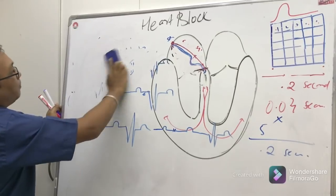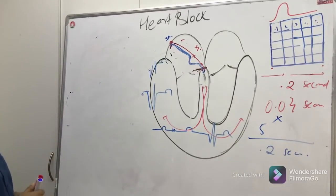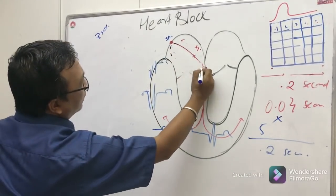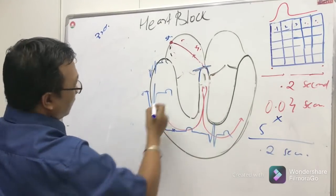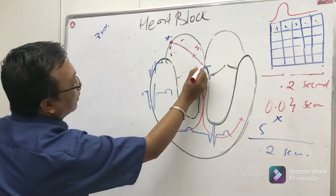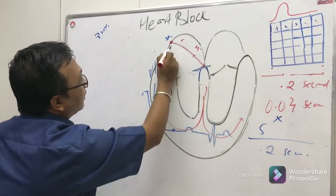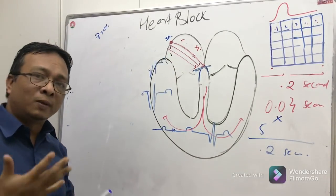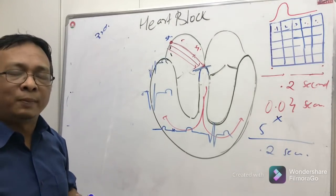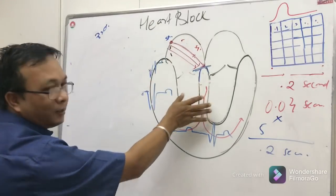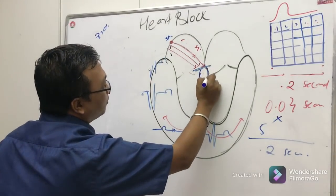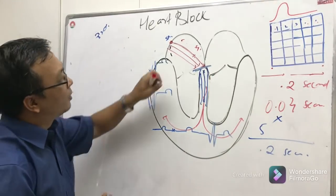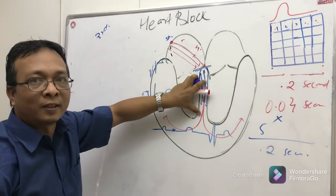Third degree heart block is a complete heart block where the atria and ventricles do not communicate at all. There is a complete block at the AV node — the impulse from the SA node arrives but cannot travel down to the ventricles. Because no signal reaches them, the ventricles begin producing their own intrinsic impulse at their own independent rate.